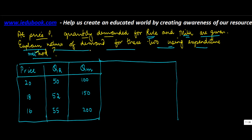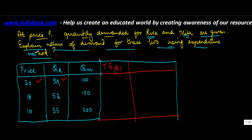Now let's extend this with the solution using a different colour. Total expenditure on rice equals price into quantity: 50 × 20 = 1000, 52 × 18 = 936, and 55 × 16 = 880. For milk, total expenditure is: 100 × 20 = 2000, 150 × 18 = 2700, and 200 × 16 = 3200.